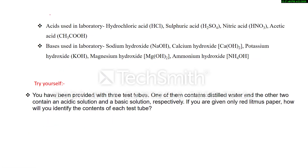Here are some examples of acids commonly found in the laboratory: hydrochloric acid (HCl), sulfuric acid (H₂SO₄), nitric acid (HNO₃), and acetic acid or ethanoic acid (CH₃COOH).